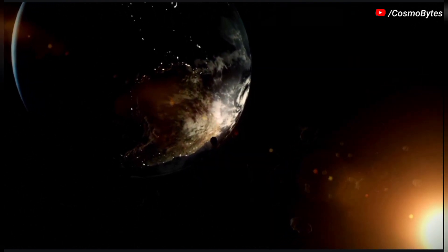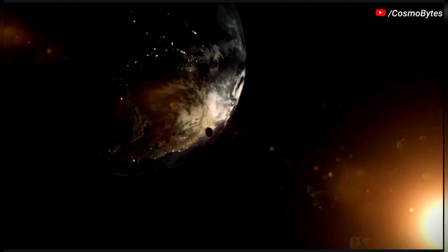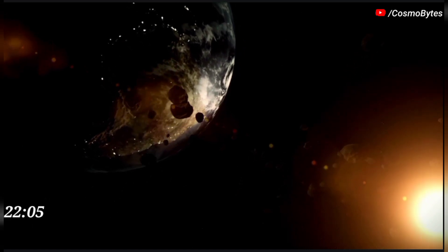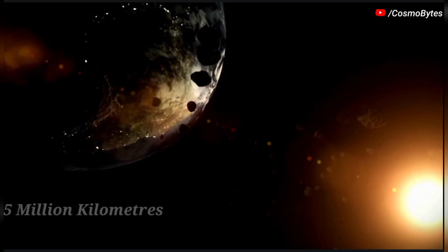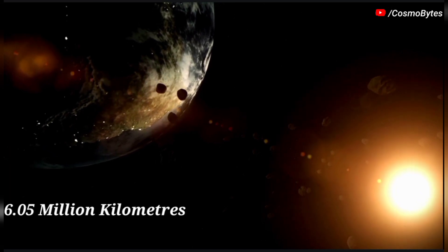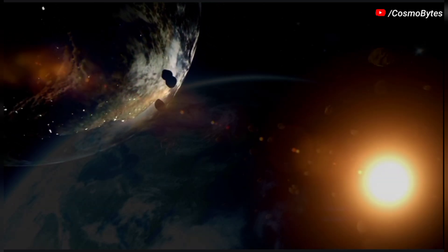This year, the asteroid 2017 BU will pass past Earth on August 29 at 22:05 at a distance of 6.05 million kilometers at a speed of 7 kilometers per second.